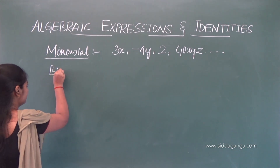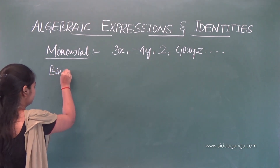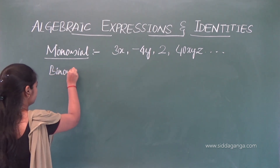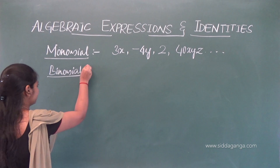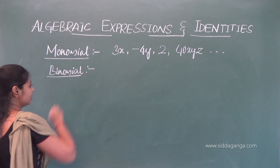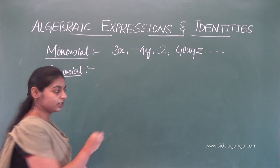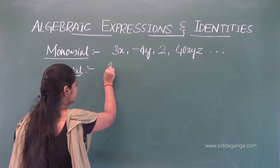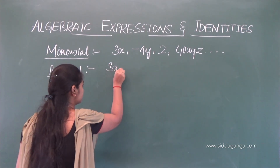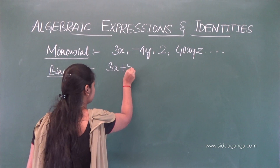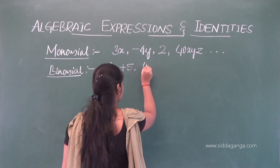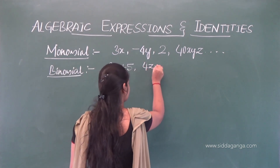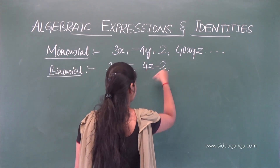Similarly, binomial. If an expression contains two terms — for example, 3x plus 5, 4z minus 2 — then it is called a binomial.